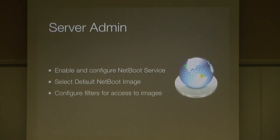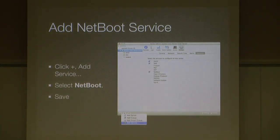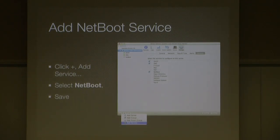Once you've created the NetBoot image with System Image Utility and moved it into place, Server Admin under the NetBoot service shows it under the Images tab. To add the NetBoot service: in the lower left corner of Server Admin, click Add Service, select NetBoot, and click Save. Make sure you wait for the progress pinwheel to finish. The process runs in the background via server-managerd and other processes doing the heavy lifting. It's okay to quit the app as long as you've saved, because those background processes continue.